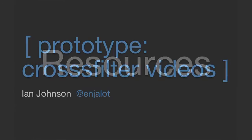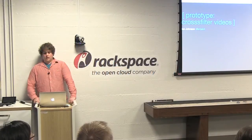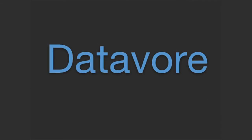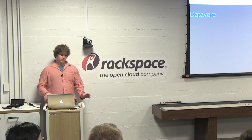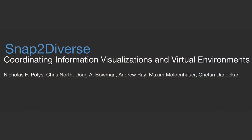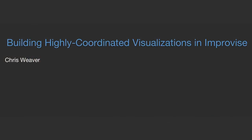To touch on some resources: take a look at a series from Ian called Prototype — he has some Crossfilter videos, pretty good ways of showing how you can play with data in Crossfilter. DataVore is a competitor in many ways to Crossfilter — it's not written in JavaScript-based querying, it's more of its own querying language, which is why it hasn't really caught on, but you should check it out for comparison. There's some material on coordinated visualizations, and Snap2Diverse is one for helping people create their own. Lark is for Microsoft Surface — the old gigantic one. There are also some papers on highly coordinated visualizations to take a look at.